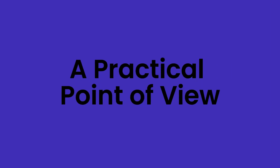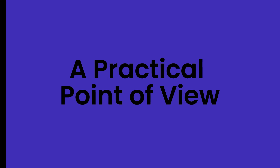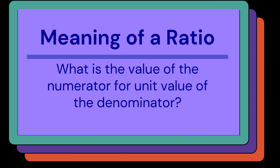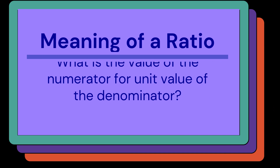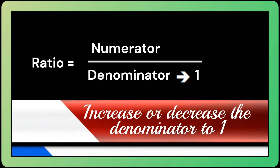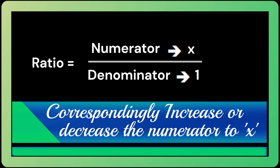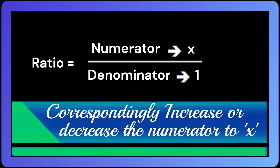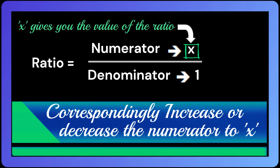Now, let's see how to look at them from a practical point of view. A ratio answers the following question: what is the value of the numerator for unit value of the denominator? Here's how we see it — increase or decrease the denominator to 1, and correspondingly increase or decrease the numerator to a value x. Then x is the ratio between the two numbers.